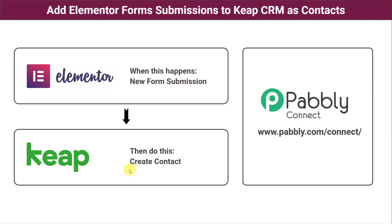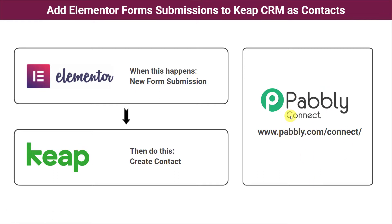For that, we need to create a connection between Elementor Form and KeepCRM so that whenever the form is filled, automatically the customer is added as a new contact in KeepCRM. In order to create this integration, we are going to use a software application named Pabbly Connect, which is an automation and integration software that will help us integrate both these applications automatically.